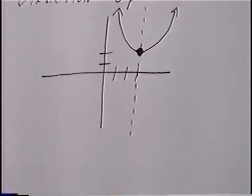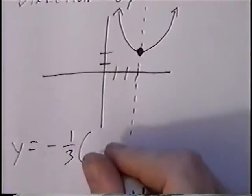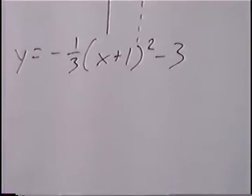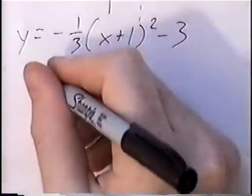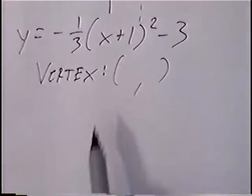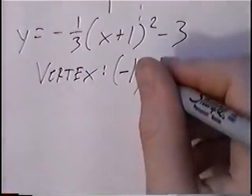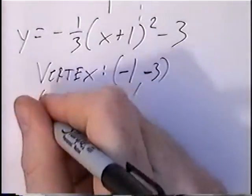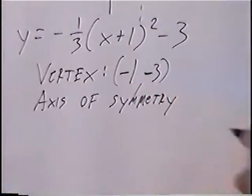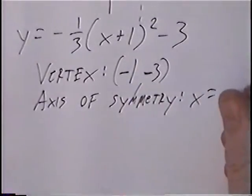The second and last question for the section is y equals negative one-third times (x plus 1) squared minus 3. Again, this equation is in vertex form. We can find the vertex: since we have x plus 1, the opposite would be negative 1, and the y-value stays the same, so the vertex is (negative 1, negative 3). The axis of symmetry is x equals negative 1.